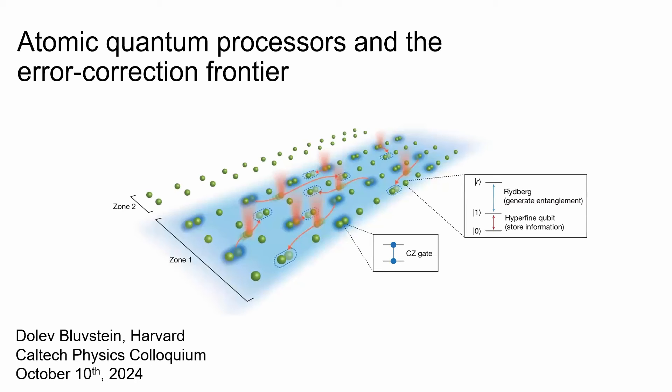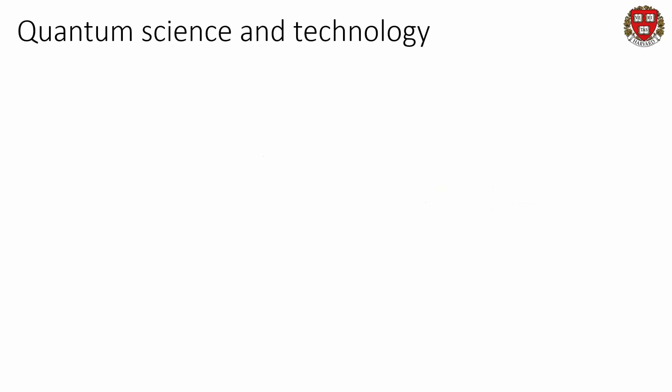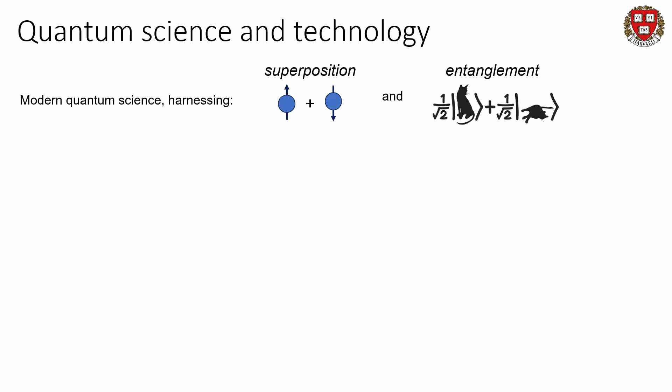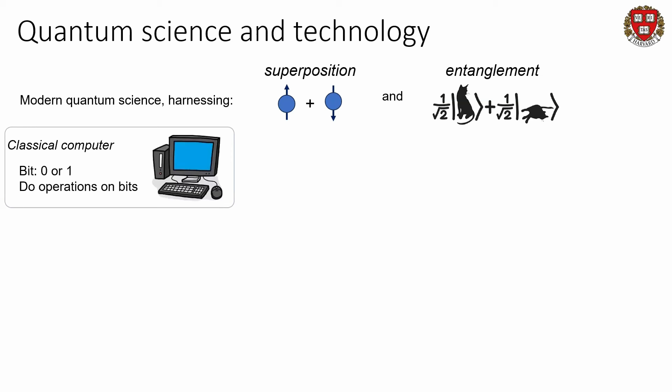Let me know if there's any challenge with hearing me. I'll tell you about some of the experiments from my PhD. Broadly, this is taking place in the larger field of quantum science and technology, where we are trying to leverage basic quantum mechanical principles like superposition and entanglement for new applications in both science and technology. A classic example is that of quantum computation.